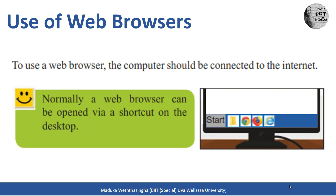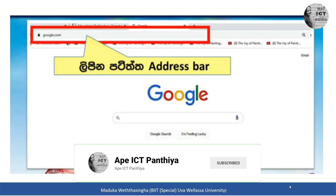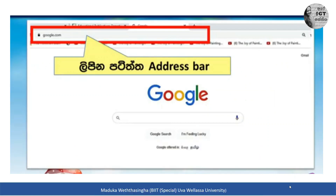If not, you can type the name of the web browser in the search bar and click on it to open the web browser. When you open the web browser you can see a dialog box, and in that box you can see an address bar. In that space you can type the address of the website or web page you want to go to.